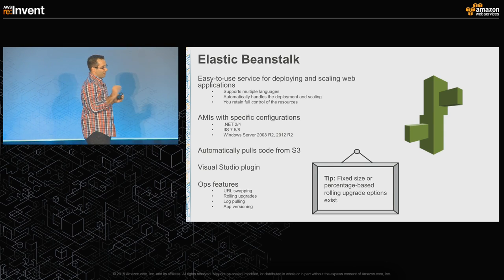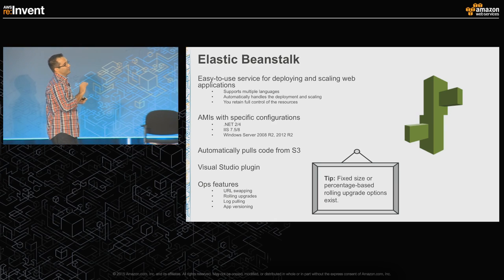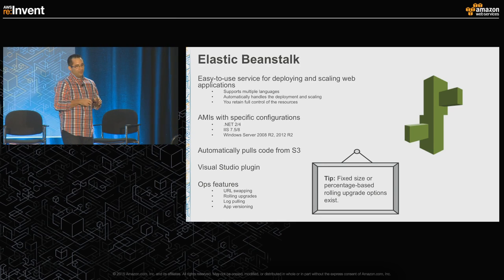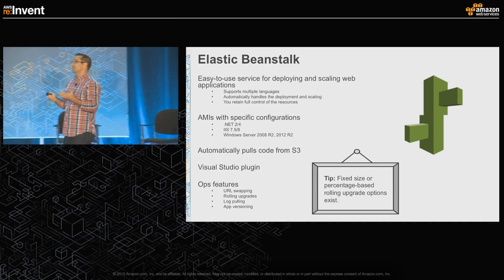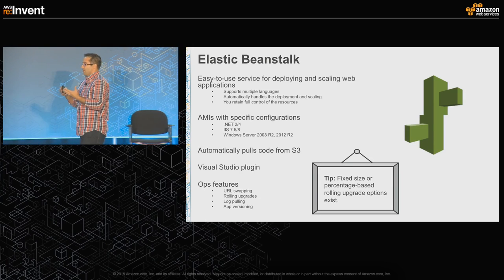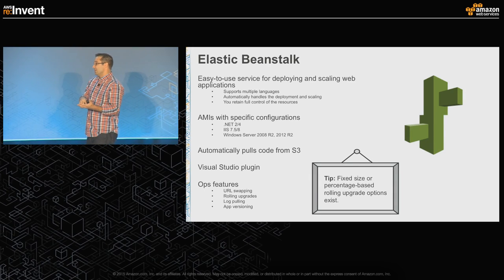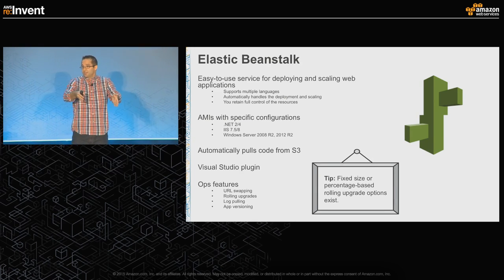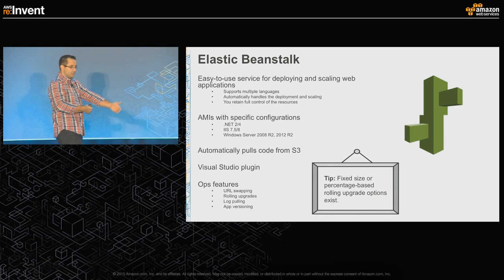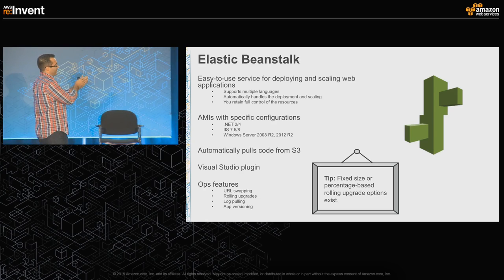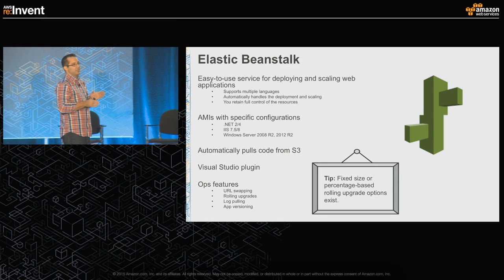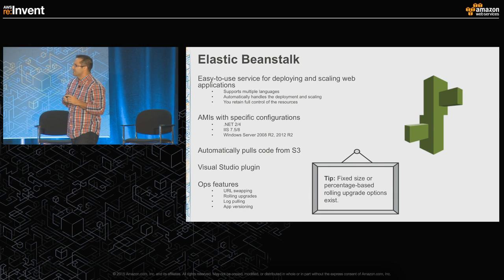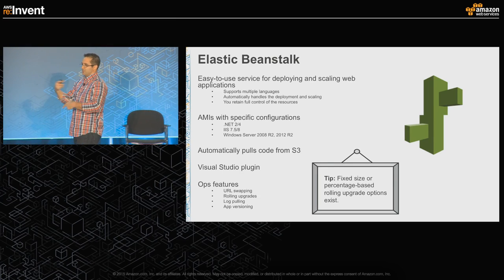A tip on Beanstalk: you have a couple of different mechanisms for making version changes — fixed-size or percentage-based rolling updates. This becomes quite interesting when you think about multiple availability zones. To what degree can you tolerate 30% or 50% of your capacity being down? If you can roll things out across multiple availability zones, you can do some pretty interesting things by picking the configuration that makes the most sense. There's a lot of flexibility in how you roll upgrades out. Not a Windows-specific tip, but important to understand as you get into iterations.